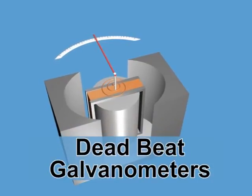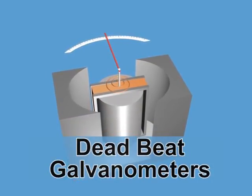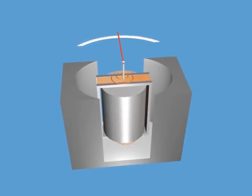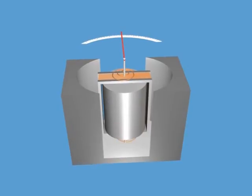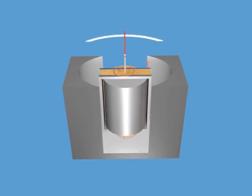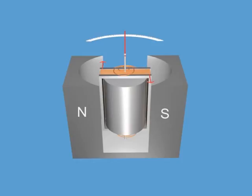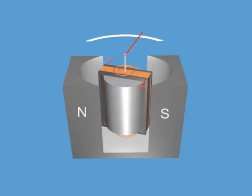Deadbeat galvanometers: The oscillations of a moving coil galvanometer generally take a long time to die out. Now, if the coil of the galvanometer is wound on a metallic frame made of copper or aluminum, the movement of the coil comes to rest in a very short time. That is, the galvanometer can be made deadbeat. This happens due to the production of eddy currents in the metallic frame.